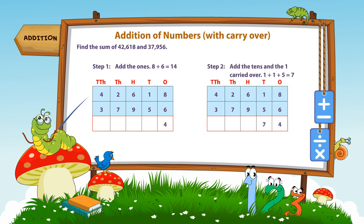Step 2. Add the tens and the one carried over. 1 plus 1 plus 5 is equal to 7.